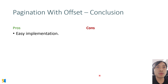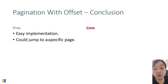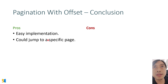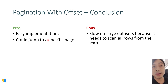The pros of offset pagination are that it's easy to implement and we can jump to a specific page — for example, page 3 or page 5 — using offset. The cons are that it's slow on larger datasets because it needs to scan all rows from the start.